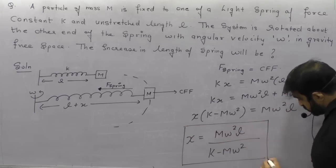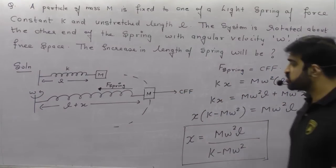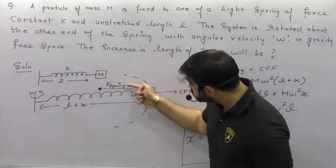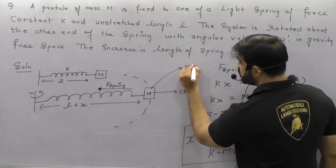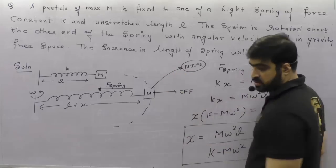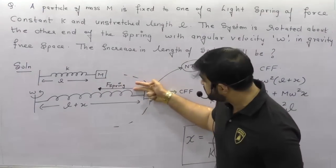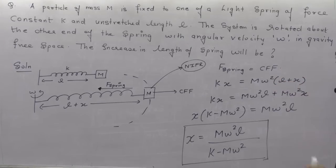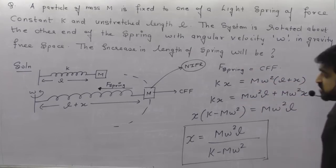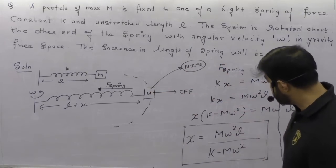The restoring force by the spring balances the centrifugal force — this is considered in the non-inertial frame of reference. You can also consider the inertial frame where the spring force provides the necessary centripetal force; both approaches give the same answer. The extension in the spring is X = M·omega²·L / (K − M·omega²).